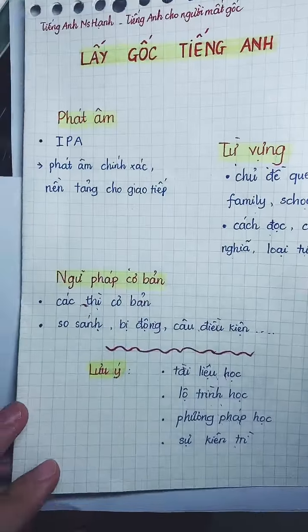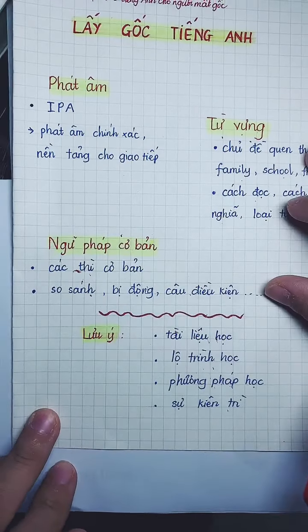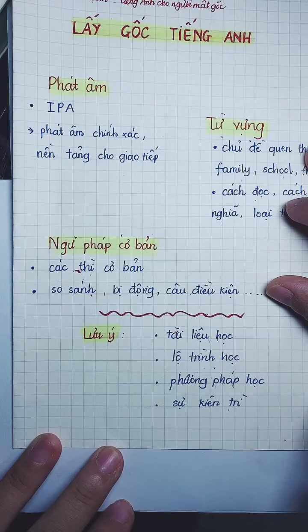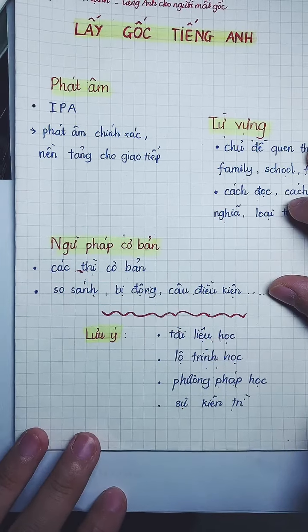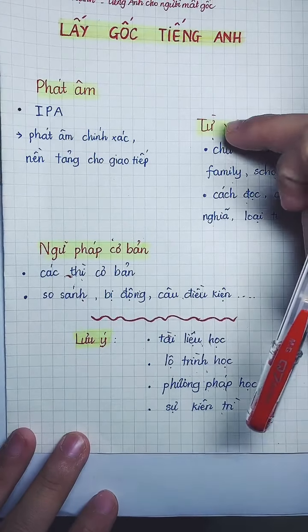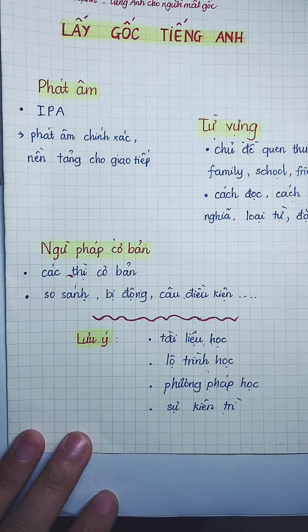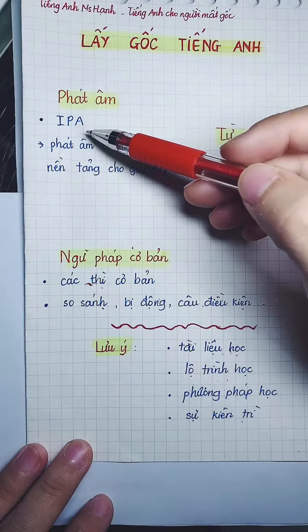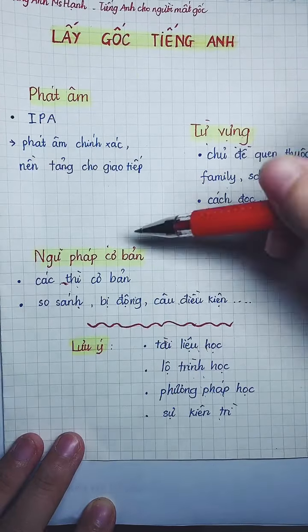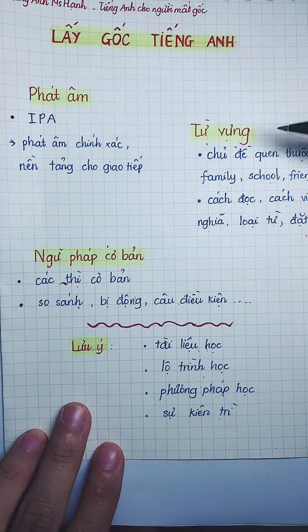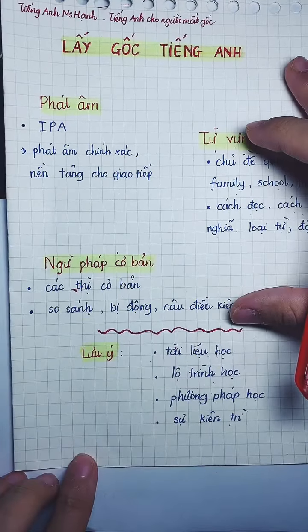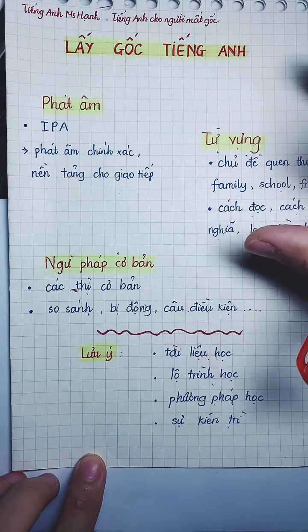Cô hướng dẫn cách học lấy gốc tiếng Anh. Tùy vào mục tiêu: học để giao tiếp khác học để thi. Mất gốc mà muốn điểm cao thì tập trung từ vựng và ngữ pháp. Phát âm IPA chỉ chiếm 1-2 câu trong đề thi. Từ vựng rơi vào bài đọc và cả các câu ngữ pháp. Về ngữ pháp cơ bản: đầu tiên học phần thì — hiện tại đơn, hiện tại tiếp diễn, quá khứ đơn, quá khứ tiếp diễn, tương lai đơn, tương lai tiếp diễn, hiện tại hoàn thành. Sau đó mới học bị động, điều kiện, so sánh, loại từ.